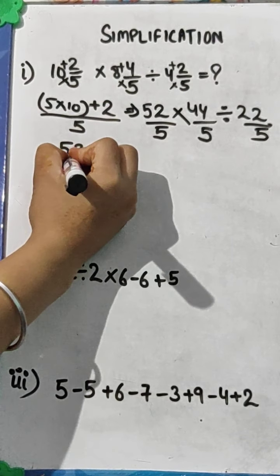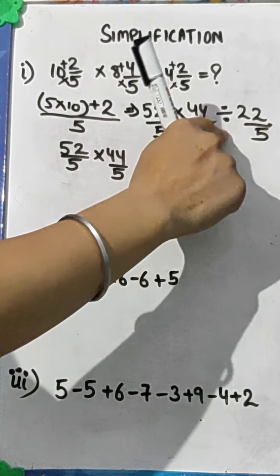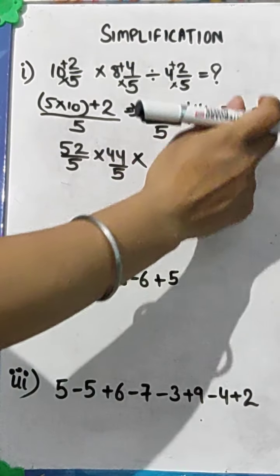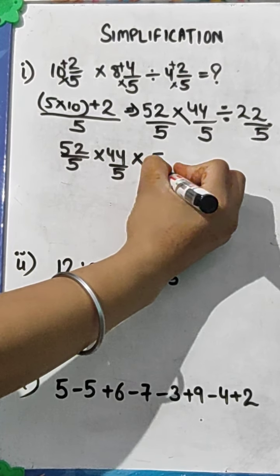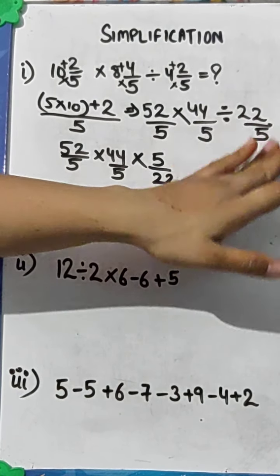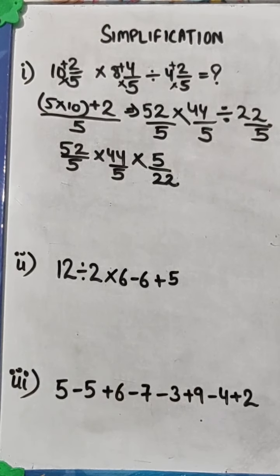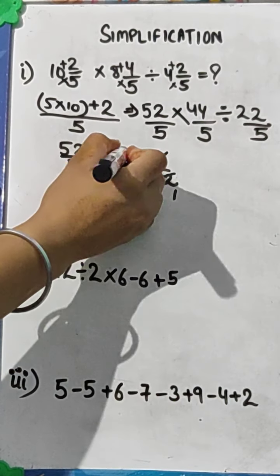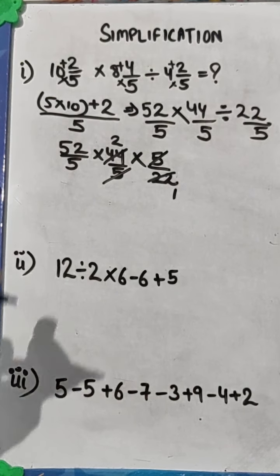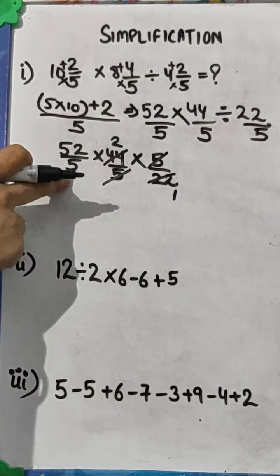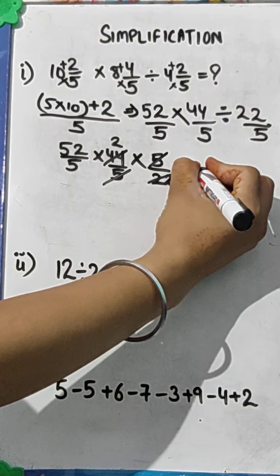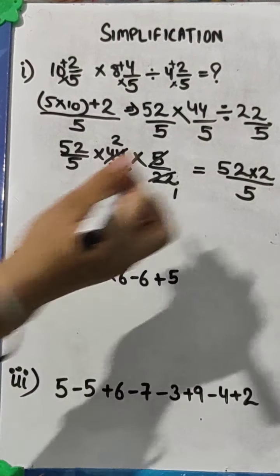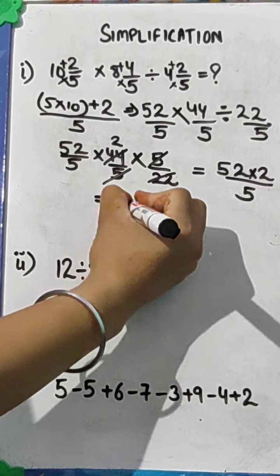So 52 by 5 multiplied by 44 by 5. In this, sign of division is given to you. As I told you, whenever we have to change the sign of division into multiplication, we have to take the reciprocal of this one. Means 22 by 5 converted into 5 by 22. So 52 multiplied by 2 is left with us in numerator and 5 in denominator. So multiply them, you will get 104 by 5.